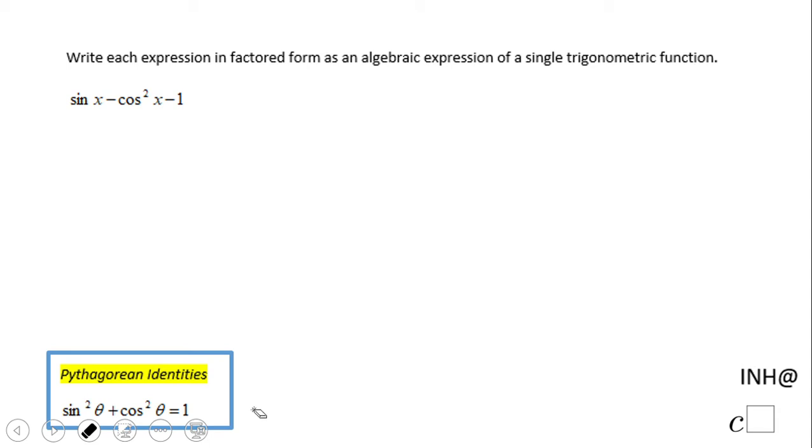In this case, I'm going to use the Pythagorean identity: sin²θ + cos²θ = 1. We can solve for cos²θ by subtracting sin²θ, so cos²θ = 1 - sin²θ. This is a very useful form of the Pythagorean identity. Now we're going to go back.